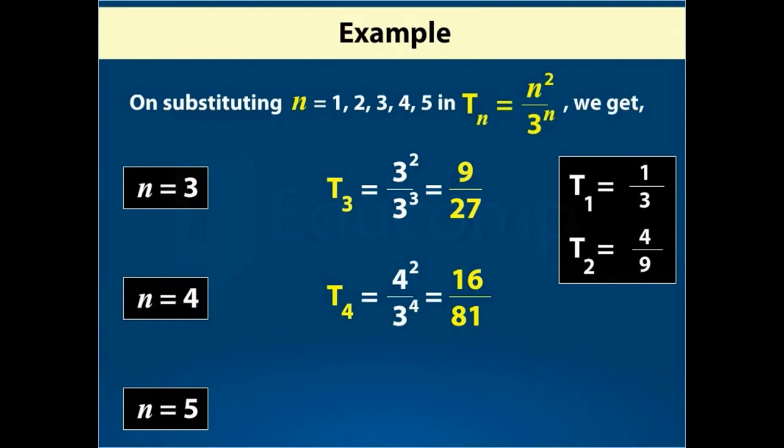For n equal to 5, T5 is equal to 25 over 243.